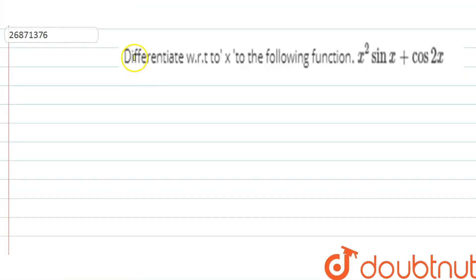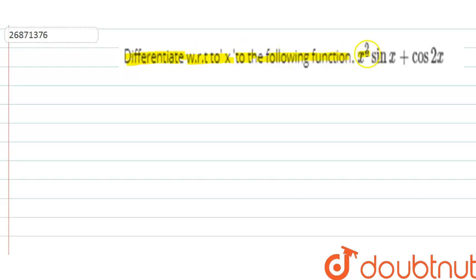Hello friends, welcome back. I hope you are enjoying Doubtnet. The question is: differentiate with respect to x the following function. The function is x squared into sin x plus cos 2x.